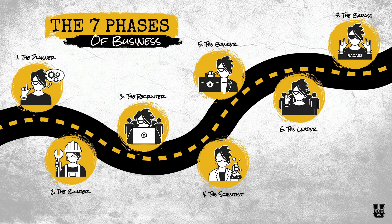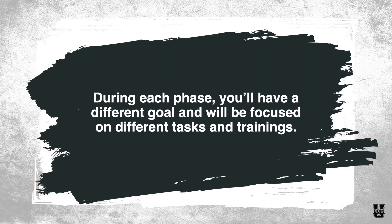So that's the idea. You plan, you build, you recruit. Then you're the scientist, which is an experimentation phase. The banker, which is about the money. The leader, which is about building a team. And then the badass. During each phase, you'll have a different goal and will be focused on different tasks and different trainings.